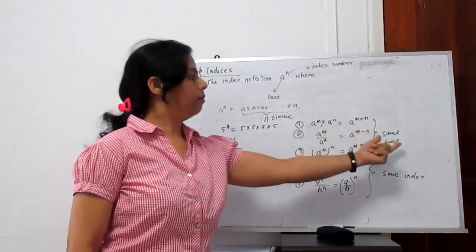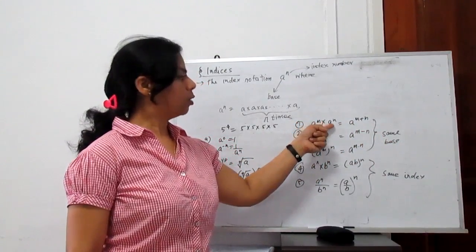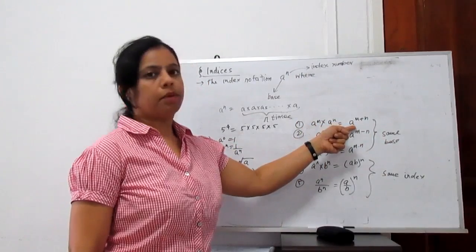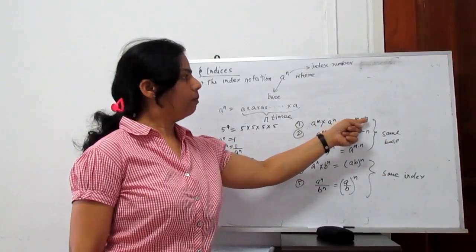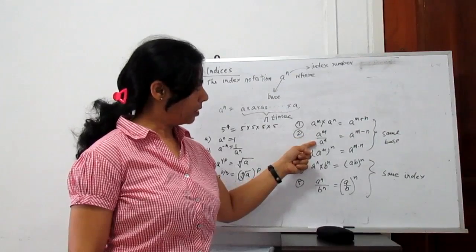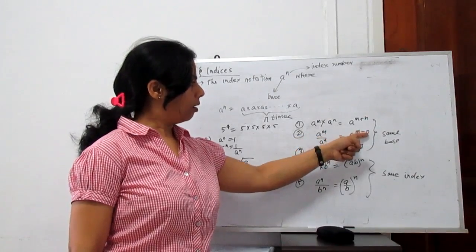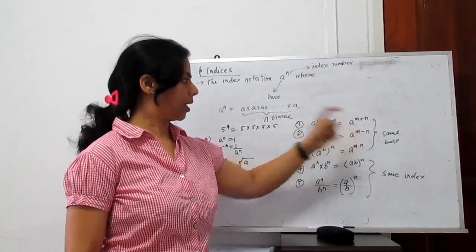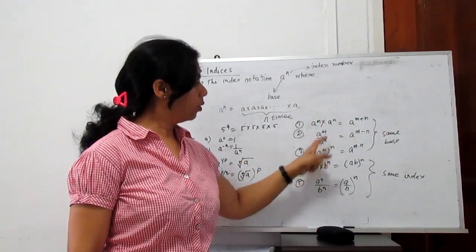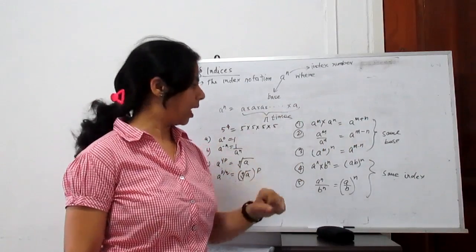If we have the same base, then a to the power m times a to the power n is represented by a to the power m plus n. In division, if the base is the same, the index is subtracted: m minus n. And a to the power m to the power n equals a to the power m times n.